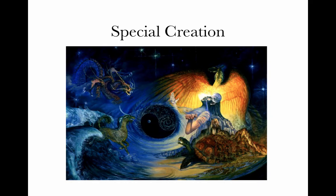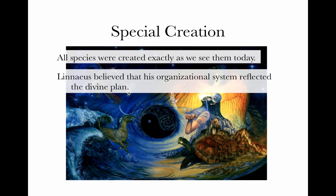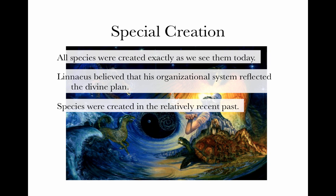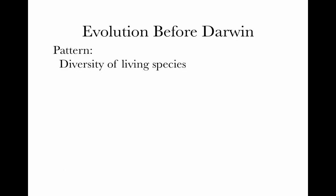At the time Linnaeus was doing this, the prevailing idea about how species came to be was special creation. Linnaeus believed that this organizational system reflected the divine plan of creation — that his study of taxonomy was actually a study of one component of the mind of the creator. There was also this idea that species were created in the relatively recent past. Archbishop Usher actually calculated the age of the earth based on the ages of the prophets and computed it was about 6,000 years old.